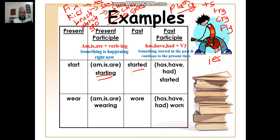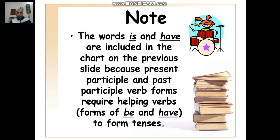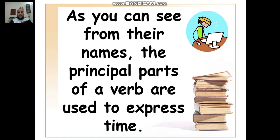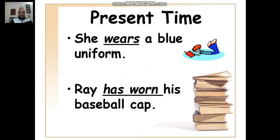Now let's go to an irregular verb like 'wear.' The present participle — add ING as usual: 'wearing.' The past is not 'weared' — that's wrong. It's 'wore,' W-O-R-E. And the past participle is 'worn.' Don't ask me for a rule — you have to learn it by heart. Note: 'is' and 'have' are included in the chart because present participle and past participle verb forms require helping verbs. The principal parts of the verb are used to express time. 'She wears a blue uniform' — with she, you add S in the present. 'Ray has worn his baseball cap' — here we have the helping verb 'has' and the past participle 'worn.' Wears is simple present; has worn is present perfect. Both are present time.